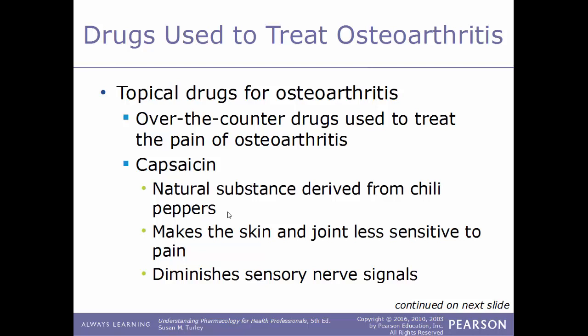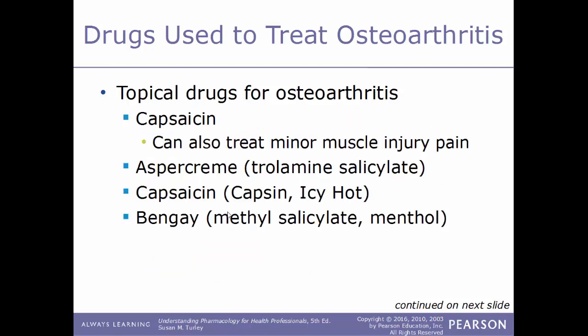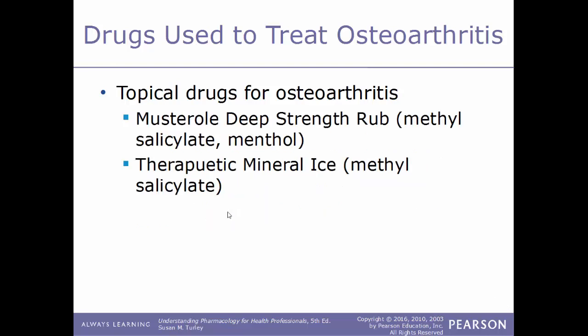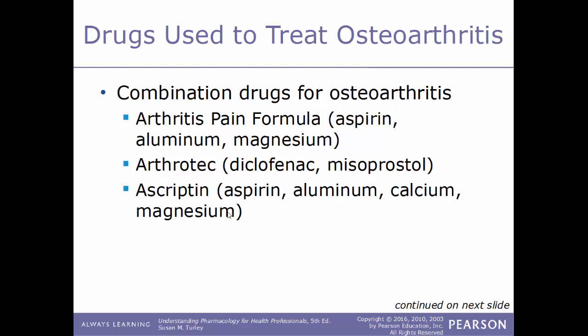Topical over-the-counter drugs are also used to treat the pain of osteoarthritis. An example is capsaicin, a natural substance derived from chili peppers that makes the skin and joint less sensitive to pain by diminishing sensory nerve signals. It can also treat minor muscle injury pain. Examples include Aspercreme (trolamine salicylate), capsaicin known as Capsin or Icy Hot, and Bengay known as methyl salicylate and menthol. Other examples include Musterole Deep Strength Rub and Therapeutic Mineral Ice.